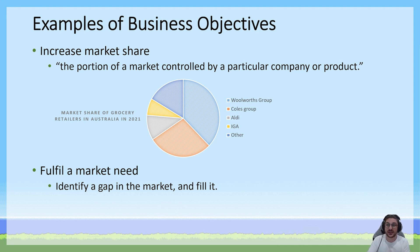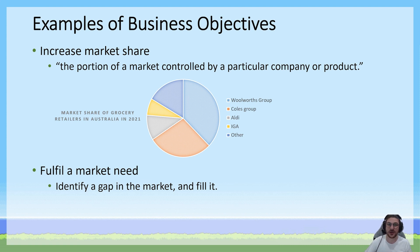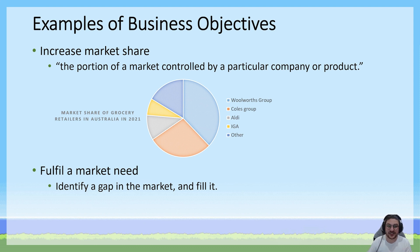If you can identify a product or service that's not currently available but would sell if it were, you've identified a gap in the market. For example, if you're at school thinking you'd like to buy an ice cream after school but there's nowhere nearby to buy one, you've found a gap. If you're thinking that, odds are others are too, and you'd likely do well setting up a small business across the road selling ice creams at 3:00 or 3:30 when people stream out. That is identifying and seeking to fulfill a market need — no business wants to bring products to market that nobody wants to buy.